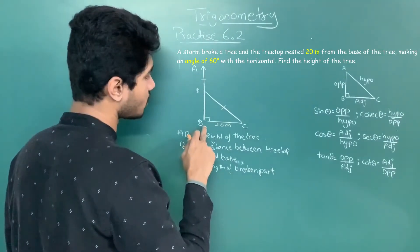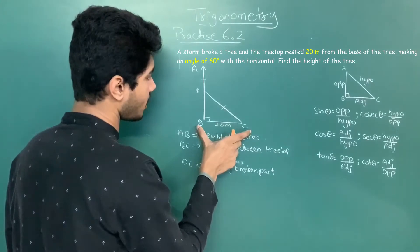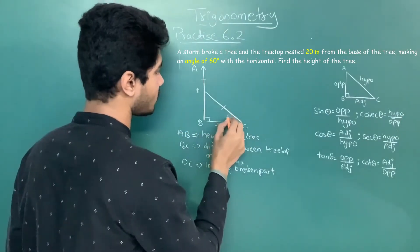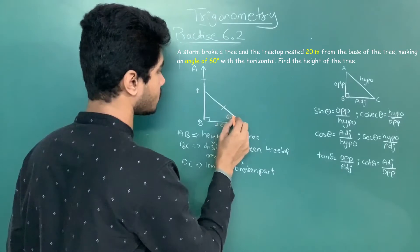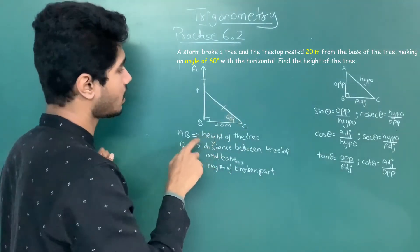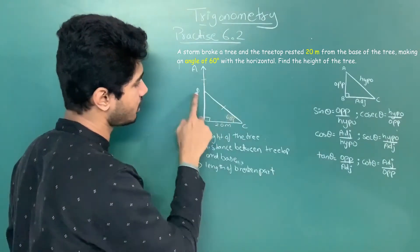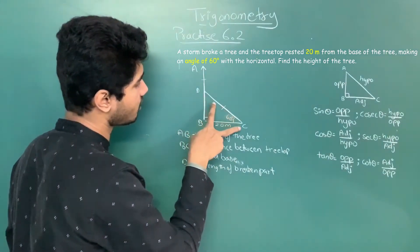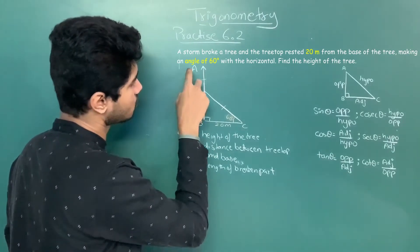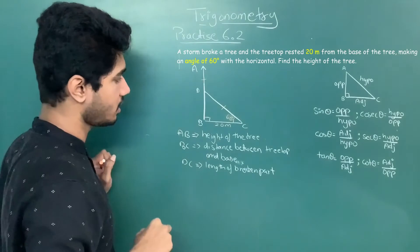We are given the value of BC and the angle of elevation as 60 degrees. We need to find DB and DC. Once we find DC, it will equal AD. Then we add AD plus DB to get the total height of the tree.